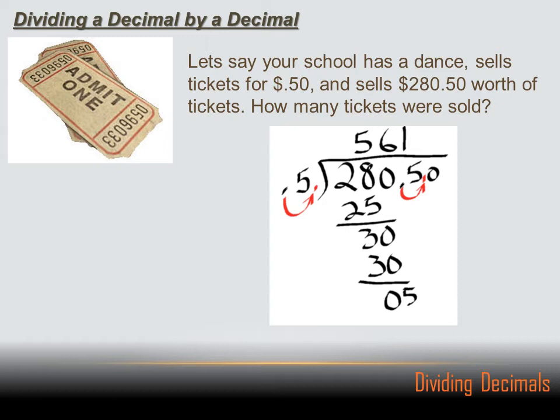Let's go back to the problem. The tickets were 50 cents a piece, and I sold 280.5 dollars worth of tickets. Well, if the tickets were 50 cents a piece, and I sold one ticket, I'd have 50 cents.